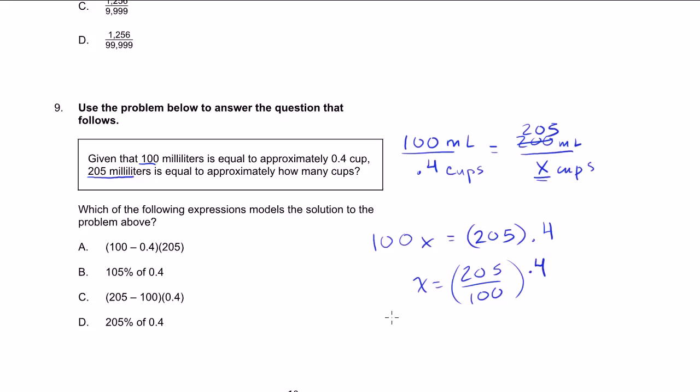We could divide either by 100, but let's see if any of the choices look like what we have there. Something times 0.4. Well this one has subtraction in it, so that's not our answer. This one also has subtraction in it, not our answer. 105% of 0.4, that's the same thing as 1.05 times 0.4. 205% times 0.4, that's the same thing as 2.05 times 0.4, which is exactly what we have here.